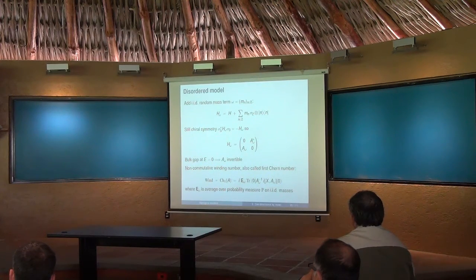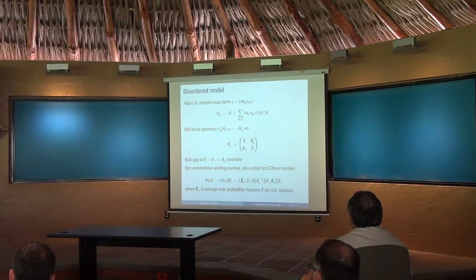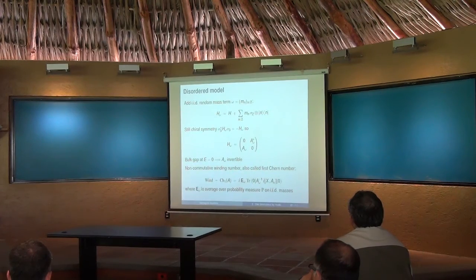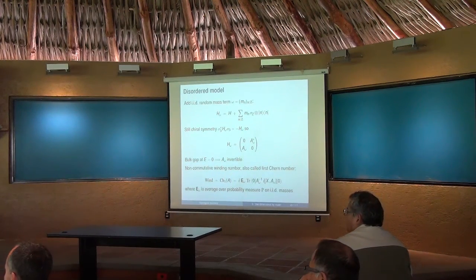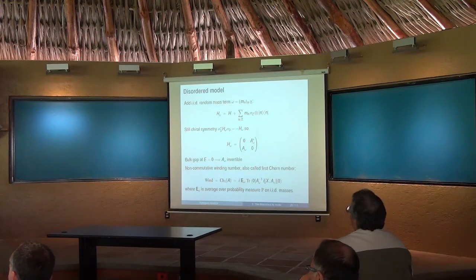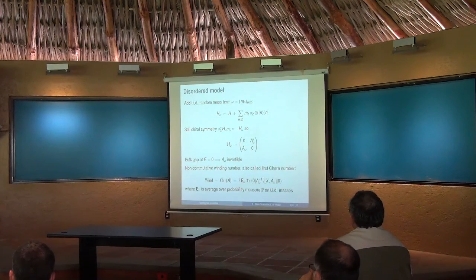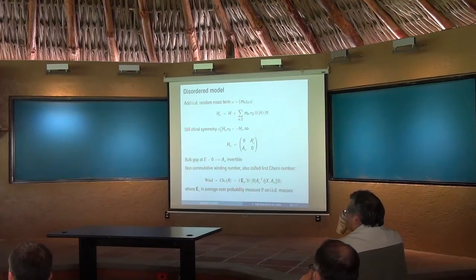That is really a tracial state — it's like a trace. You can do all the usual tricks you're used to doing with a trace. In the commutative case, it's the integral over a closed manifold, which is just the circle in this case, where you can also do integration by parts without boundary terms, just like you can with a trace.